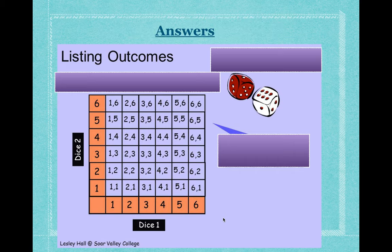Now let's check. These are the rest of the outcomes. For example, we roll die one and get three, we roll die two and can have one — and these are the possible outcomes. There are thirty-six possible outcomes altogether, and this is our sample space, shown like this — all the possible outcomes.